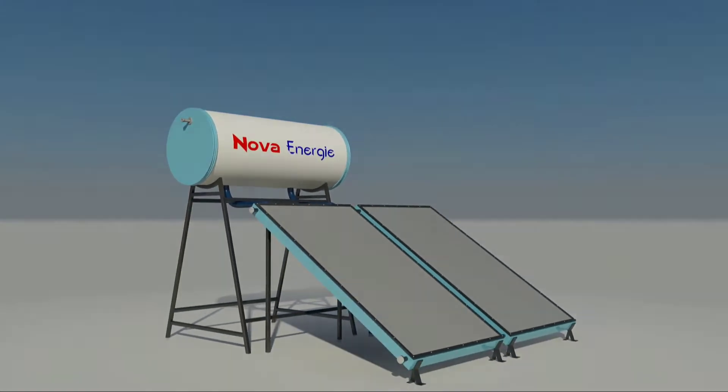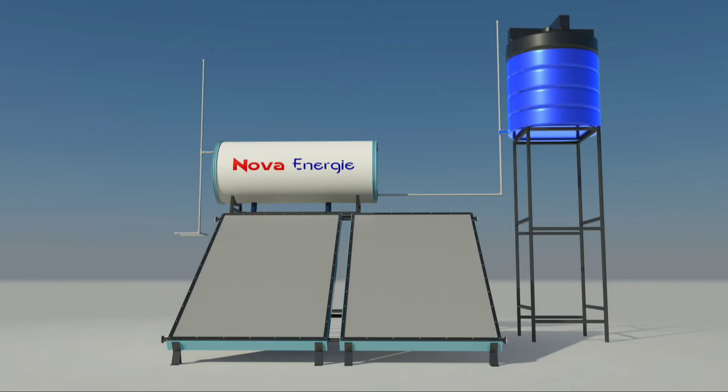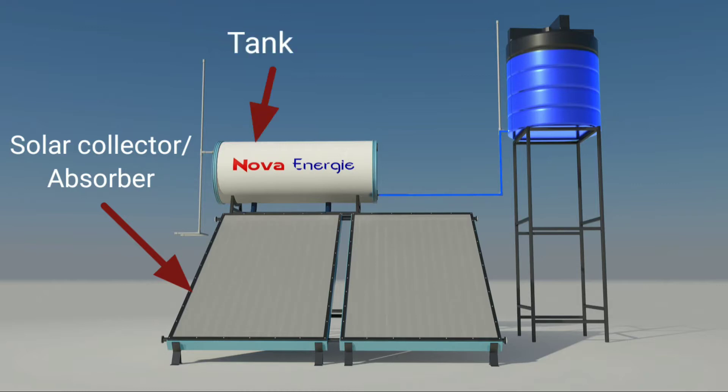The components of a typical solar water heating system are: solar collector, hot water storage tank, piping, inlet water regulating mechanism, and provision for vent.